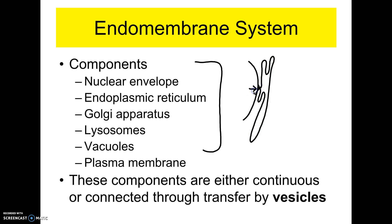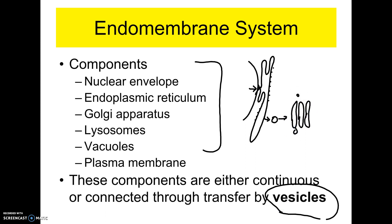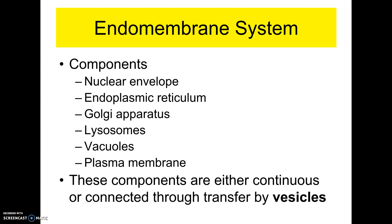When the rough ER makes or modifies a protein, a piece of that rough ER can literally bubble off and form a vesicle, carrying that protein product to the Golgi bodies. That piece of membrane can fuse with the Golgi, then another piece can break off and carry the product to the cell membrane, where it fuses and becomes part of the cell membrane. That's why this is called the endomembrane system.